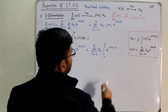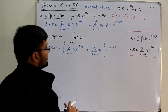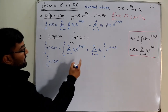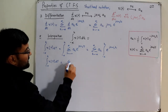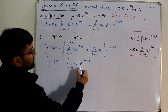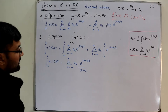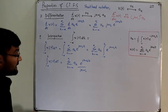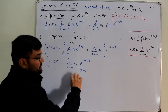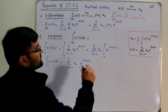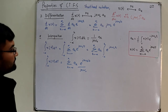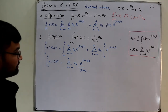Integrating the exponential of jkω₀t divides it by jkω₀. Therefore, the integral of x(τ)dτ equals the summation over k of a_k divided by jkω₀ times the exponential of jkω₀t. This means that to obtain the Fourier coefficients of the integrated signal, we divide the original coefficients a_k by jkω₀.